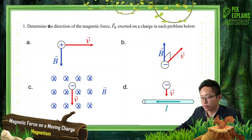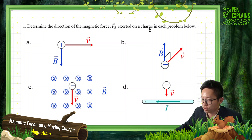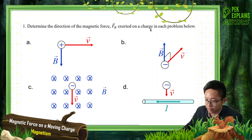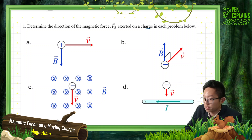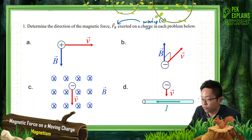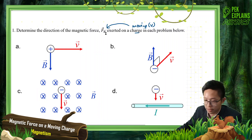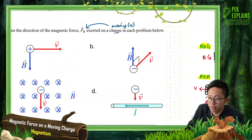Okay, let's look at this question: determine the direction of the magnetic force FB exerted on a charge in each problem below. This is all about direction, and it's very important. The charge must be moving in order to experience a magnetic force — if it's stationary, there's no magnetic force.